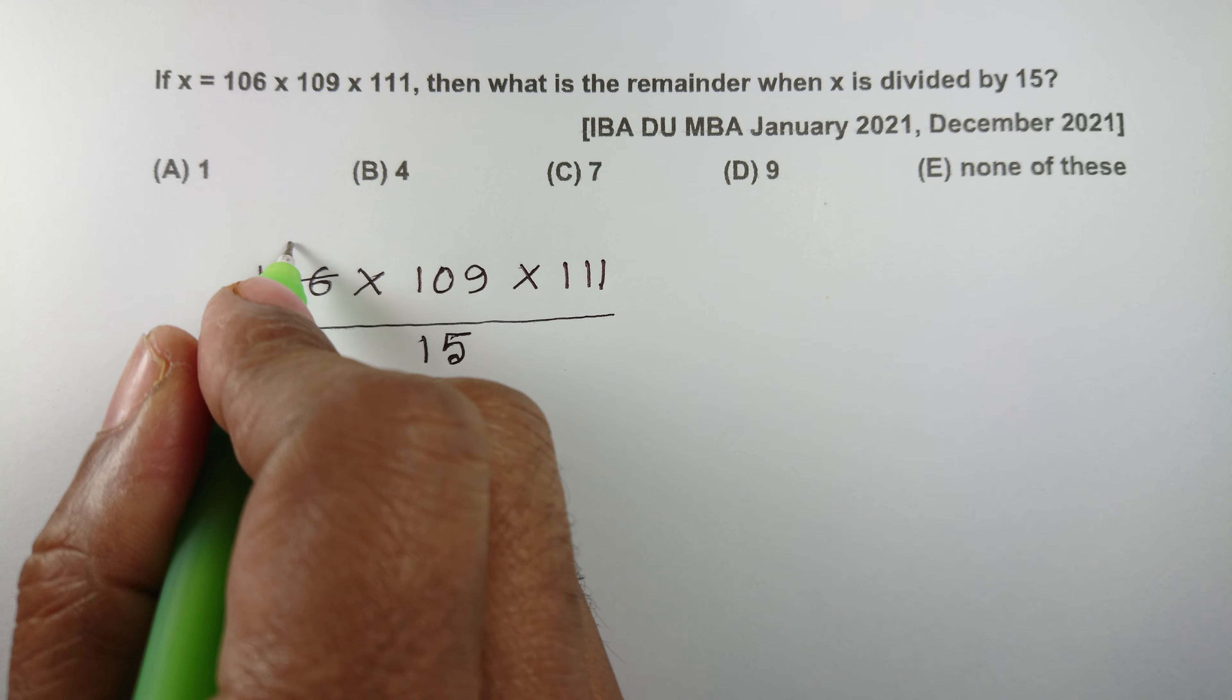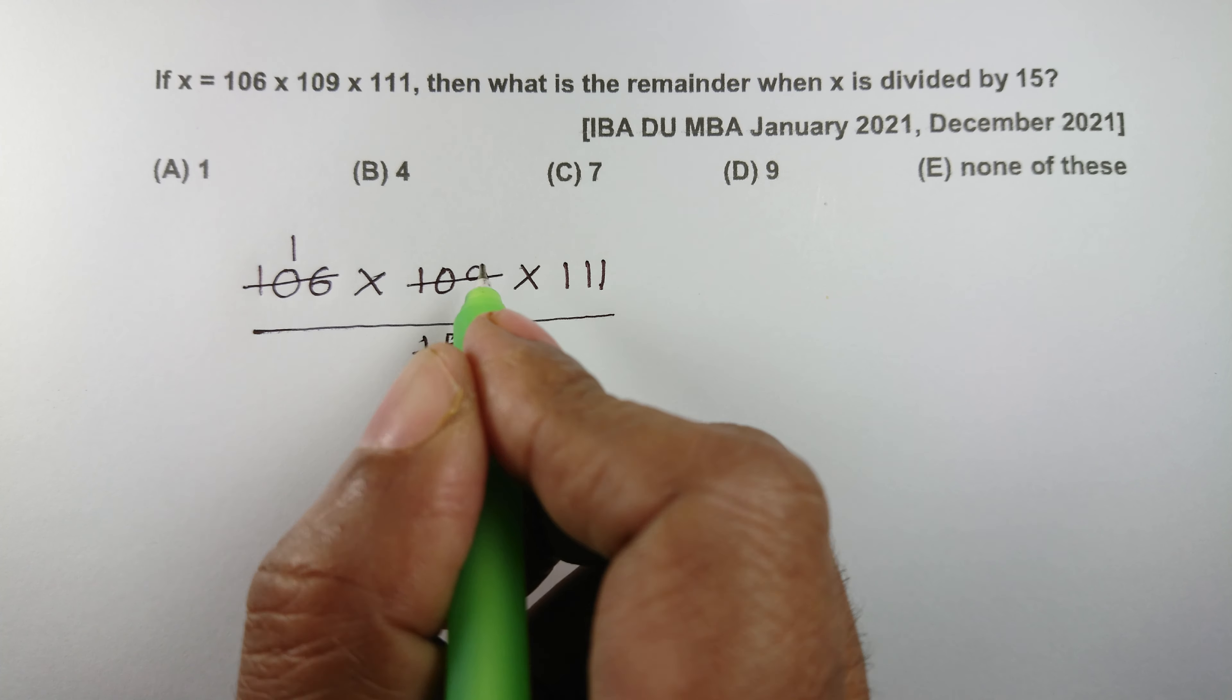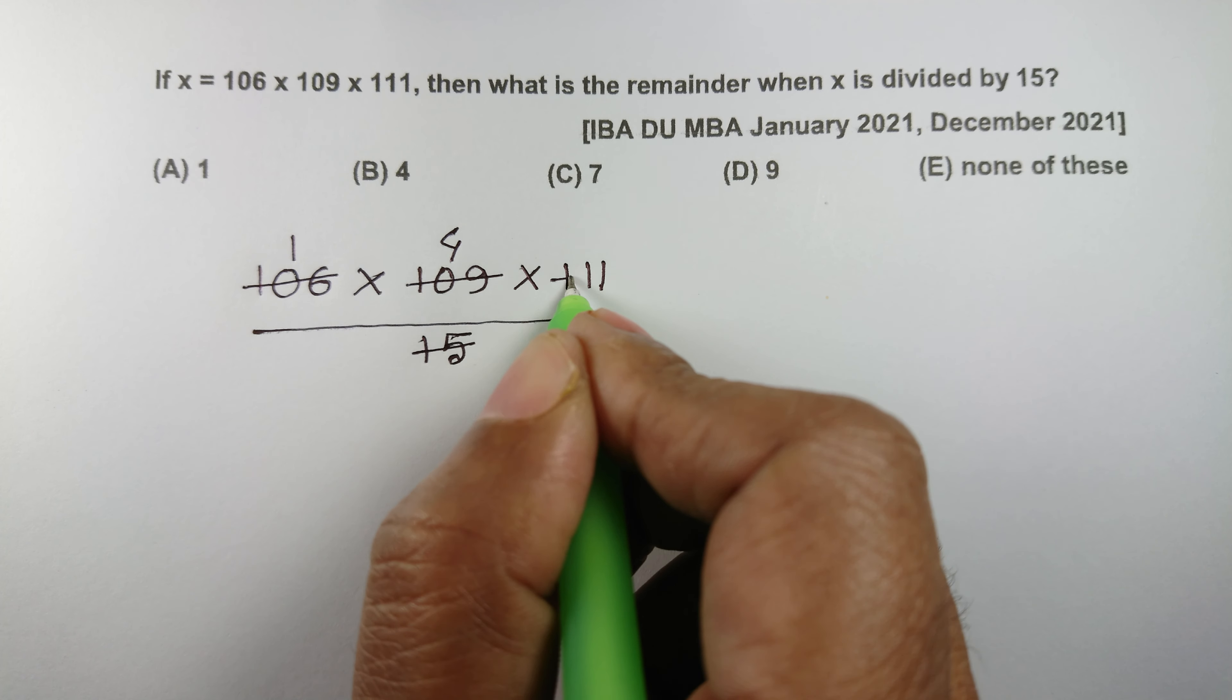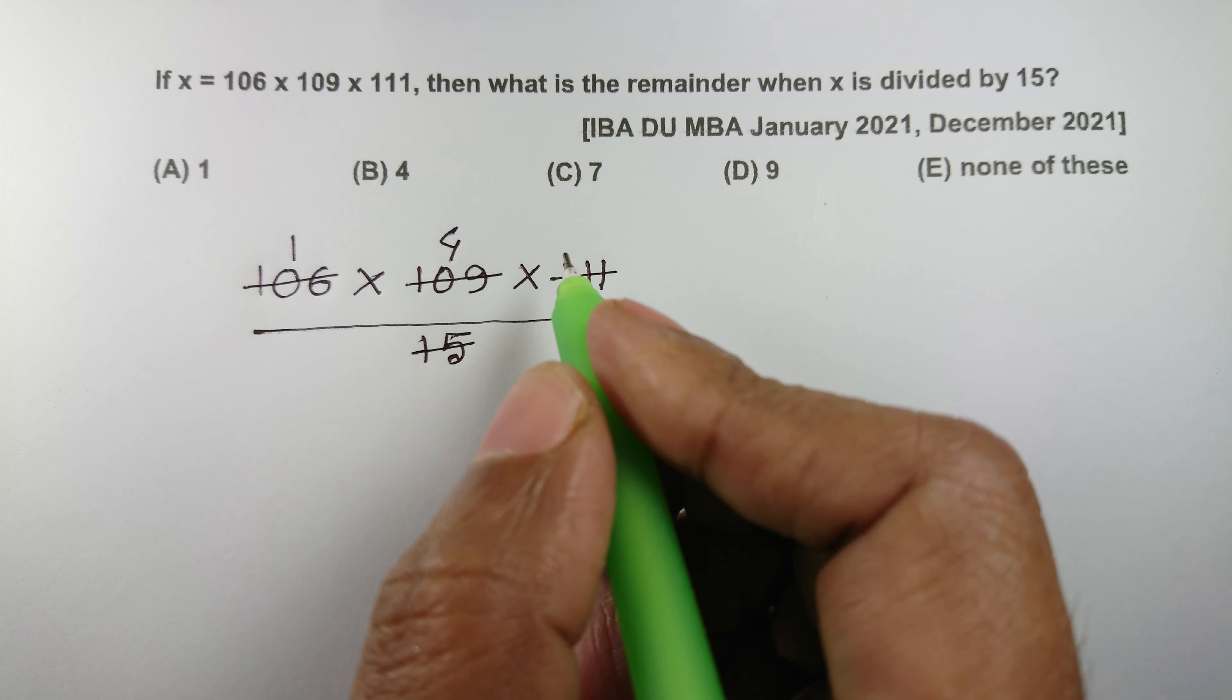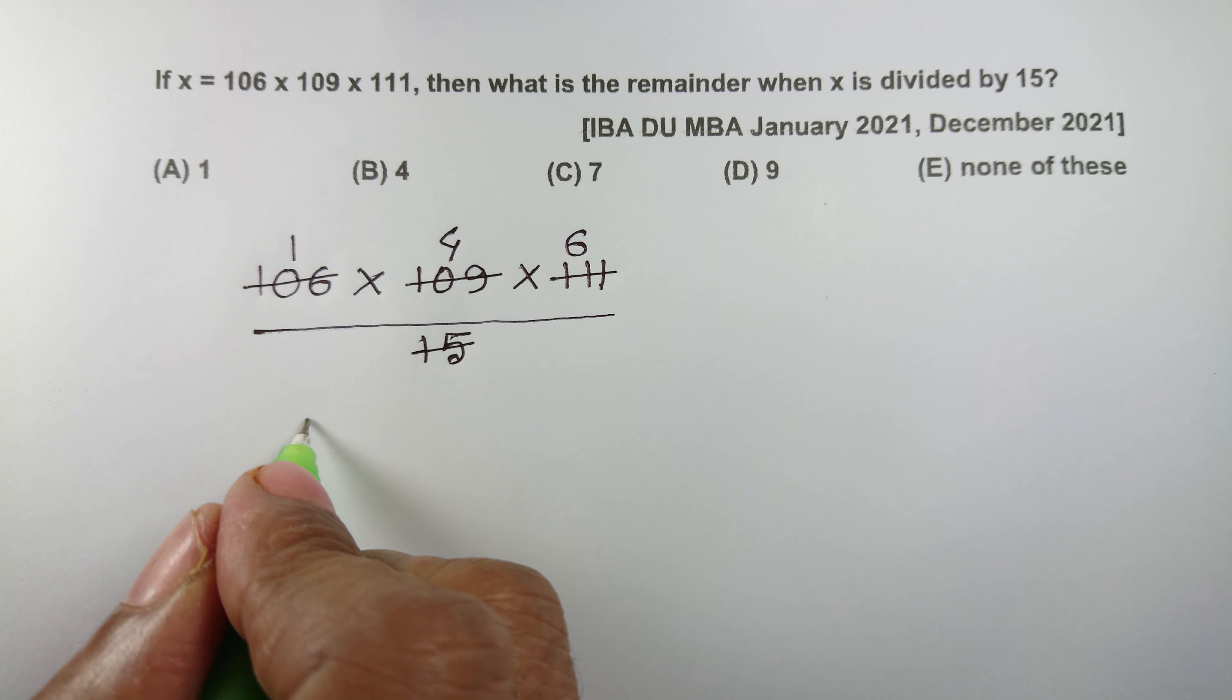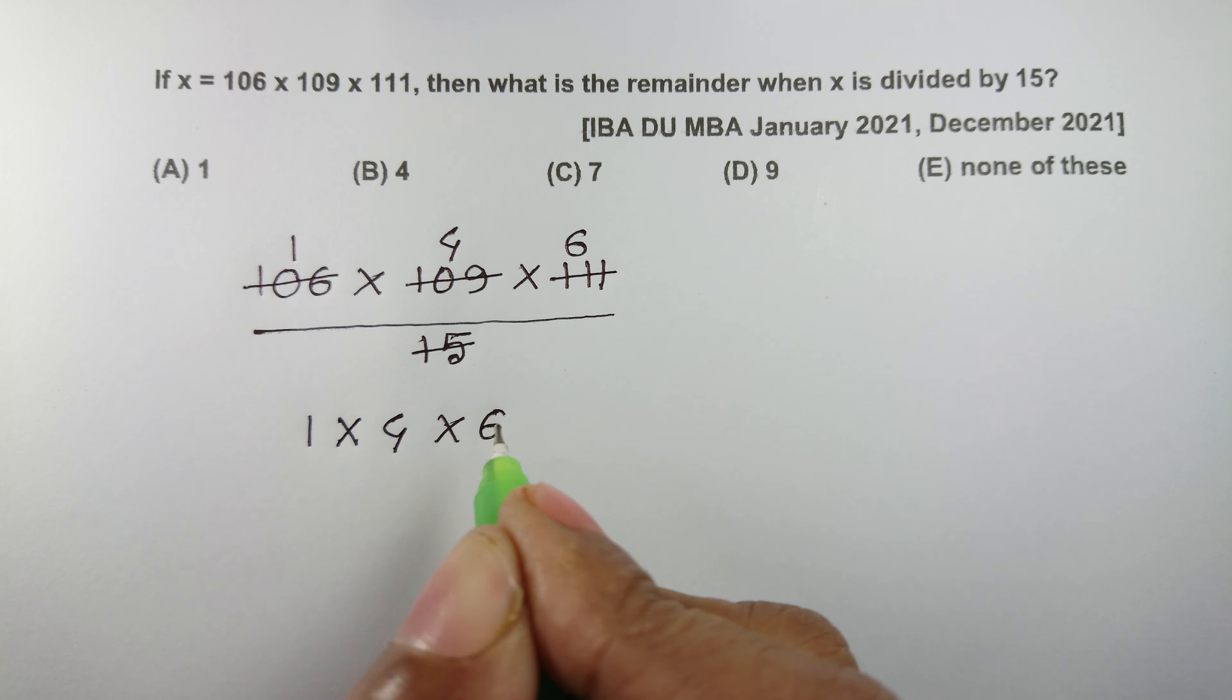તેમજ રીતે 15 થી... આવા છે 30 તો 109 ગુણાકાર કે આવા 15 થી ડિવાઇડ કરવા તો રિમાઇન્ડર આવશે 4. આને 6 મલ્ટિપ્લાય ગુણાકાર